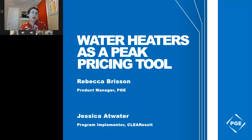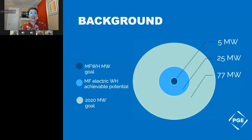As PGE, we were challenged with achieving an overall 77 megawatt goal by 2020. For water heaters specifically, we were tasked with providing five megawatts of power back to the grid, but we feel there's a total achievable potential of 25 megawatts and we are getting pretty close. COVID has obviously thrown a wrench in our plans, stopping installs for several months, but we will take you through what that looks like for us.